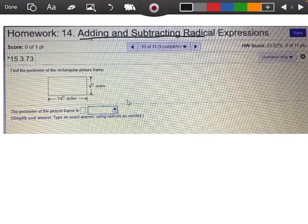We're going to be adding and subtracting radicals. So the question here says, find the perimeter of the rectangular picture frame.